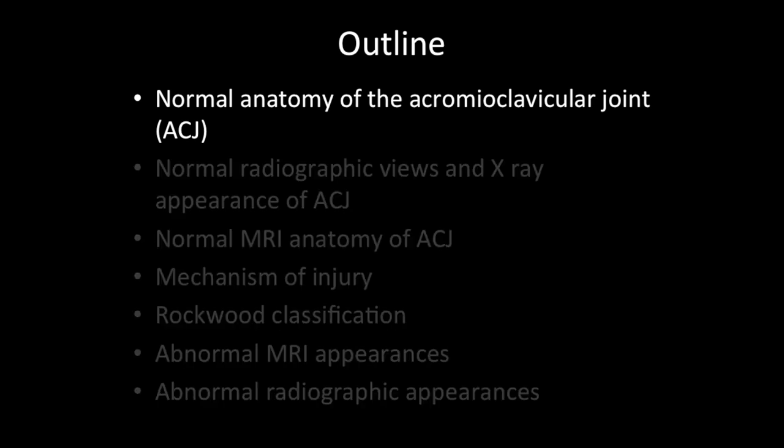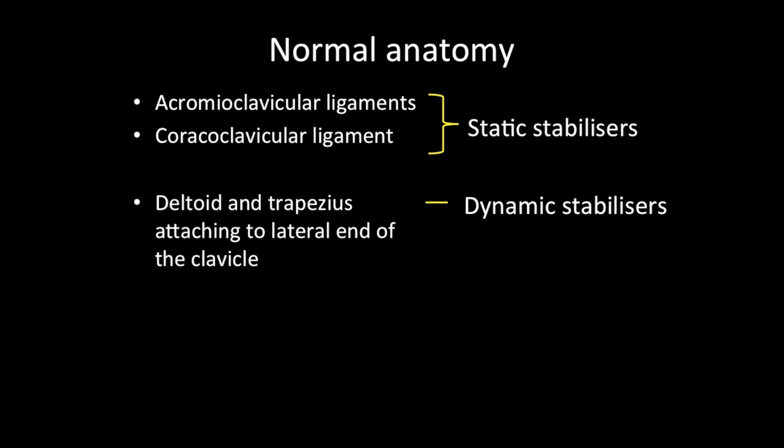The AC joint is stabilized by static and dynamic stabilizers. The static stabilizers are the ligaments, and the dynamic stabilizers are the muscles attaching to the clavicle. The ligaments are named depending on the bones they connect — so you have the acromioclavicular ligament and the coracoclavicular ligament. The acromioclavicular ligaments are two in number: superior and inferior.